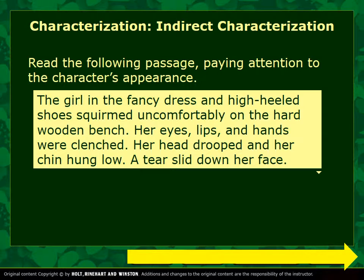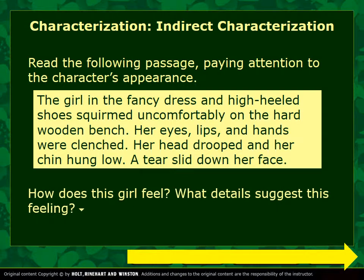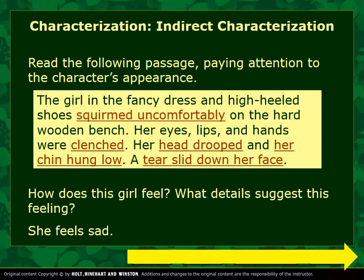Read this following passage, paying special attention to the character's appearance. The girl in the fancy dress and high-heeled shoes squirmed uncomfortably on the hard wooden bench. Her eyes, lips, and hands were clenched. Her head drooped and her chin hung low. A tear slid down her face. What do we know about this girl based on this description? If you picked the highlighted words and said that she feels sad, you got it. This is a great example of indirect characterization through a character's appearance.